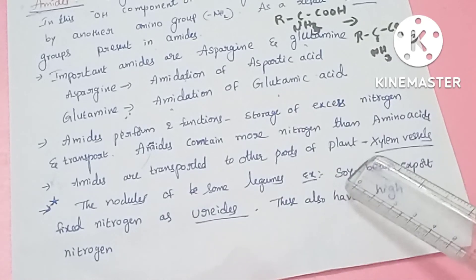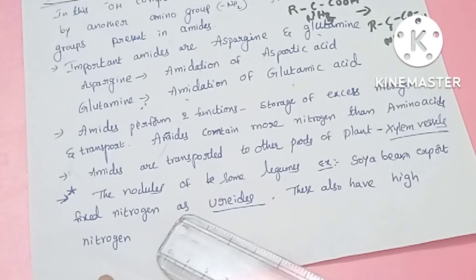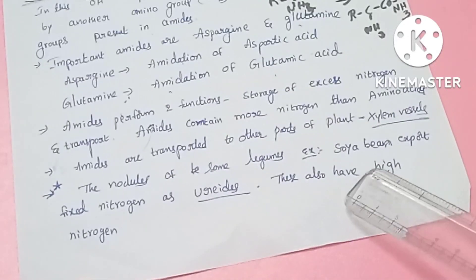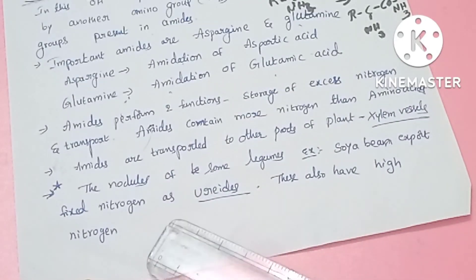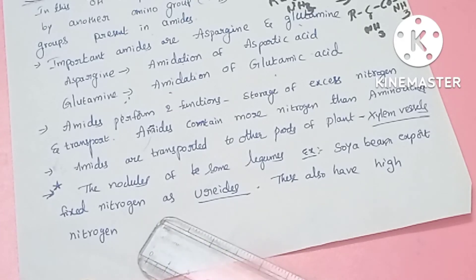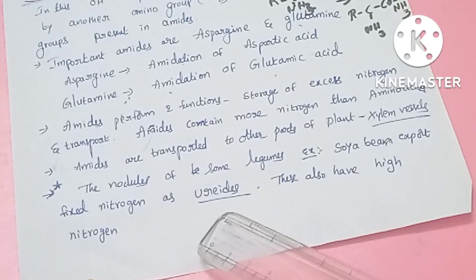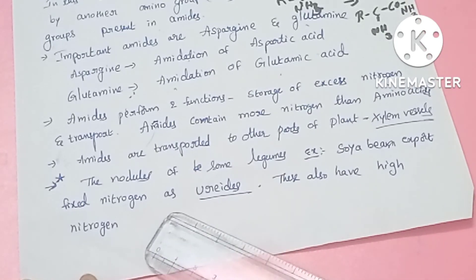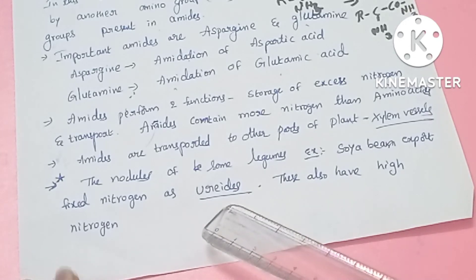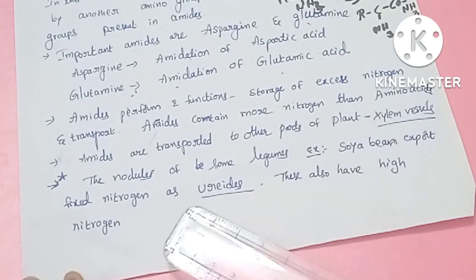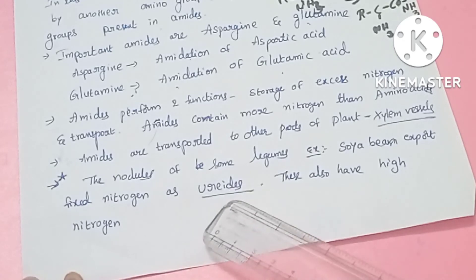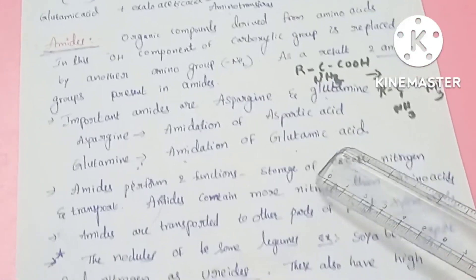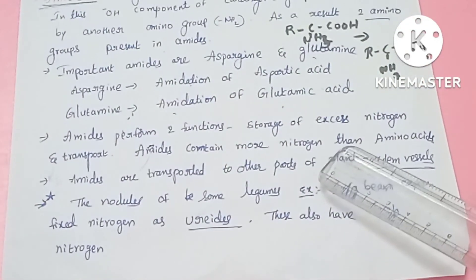Amides can be transported by the xylem vessels. For legume plants, for example soybean, when the nodule fixes nitrogen, the fixed nitrogen is exported in the form of ureides — nitrogenous compounds. This is about amides and ureides. With this, we have completed the topic of mineral nutrition.